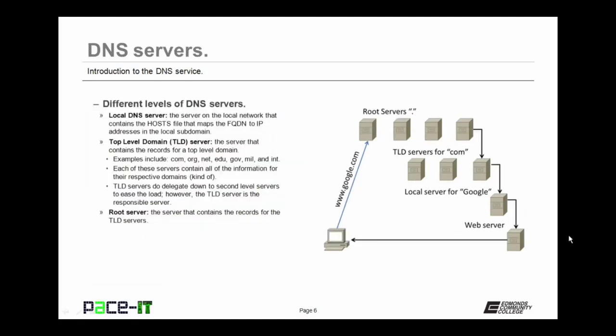Let's talk about the different levels of DNS servers. First, there can be a local DNS server — a server on the local network containing the hosts file that maps all FQDNs to their specific IP addresses in the local subdomain. Then there are top level domain servers, or TLD servers, which contain the records for the top level domains. Examples of top level domains are .com, .org, .net, .edu, and so forth.